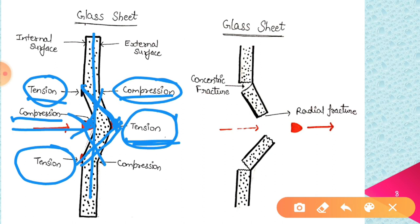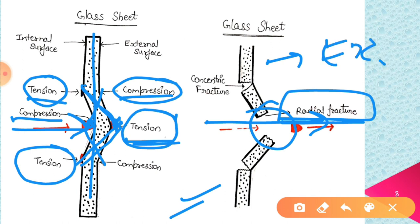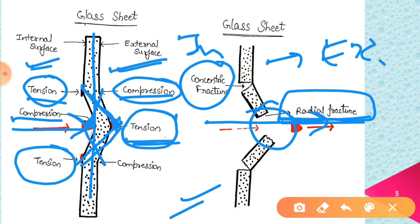Glass fractures when the compression or tension — or the velocity of a particular projectile — reaches or crosses the elasticity limit of glass. Here you can see that the projectile crosses the elasticity limit of glass and breaks the glass, forming a hole. In a radial fracture, the opposite surface breaks first — the opposite surface is also termed as the external surface, and the surface on which the point of impact lies is termed as the internal surface. In concentric fracture, the point-of-impact surface breaks first — that is, the internal surface breaks first — while in radial fractures the external surface breaks first.